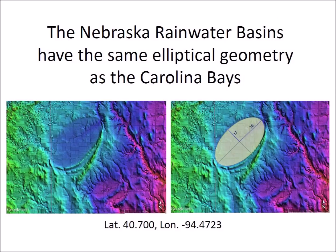Nebraska also has geological structures with the same elliptical geometry as the Carolina Bays. The Nebraska Rainwater Basins are oriented from the northeast to the southwest, almost perpendicular to the orientation of the Carolina Bays. They occur on terrain that is 550 to 650 meters above sea level, mainly on sandy soil south of the Platte River. Nebraska has not been close to any sea since the Laramide Orogeny started building the Rocky Mountains and drained the western interior seaway more than 60 million years ago. The Nebraska Basins exist on a loess-covered topography dated at approximately 27,000 radiocarbon years before the present.